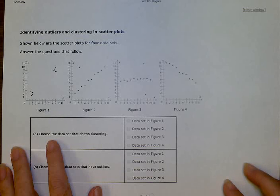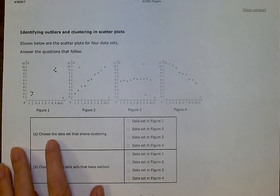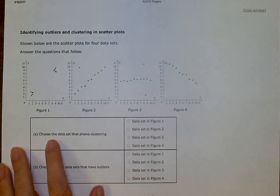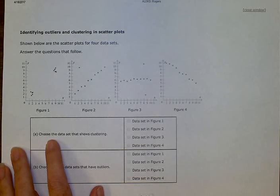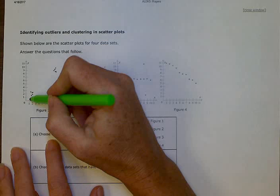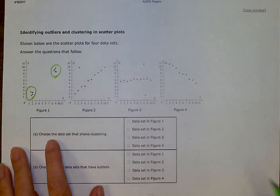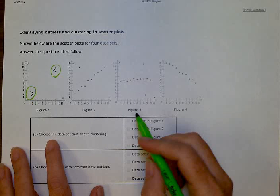So A says choose the data set that shows clustering. Clustering means grouping together. Right, so they are in a little group. That's a cluster. So this is a cluster, and this is a cluster. So we are going to pick figure one.